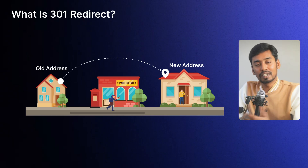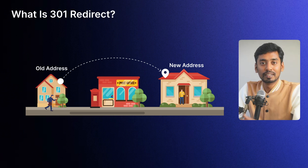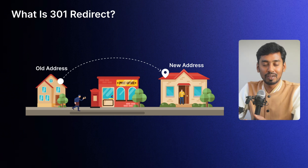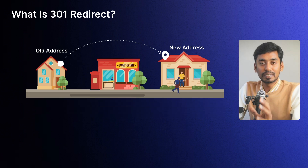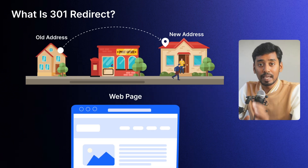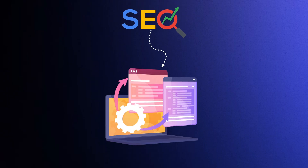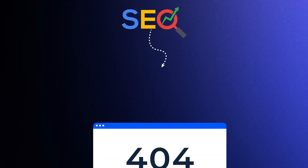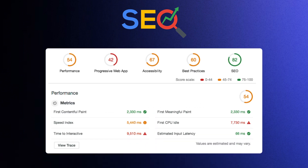So first, what is a 301 redirect? Think of it like changing your home address. When someone types in your old address, they don't just get lost — the post office forwards them to the new one. A 301 redirect does the same thing, but for web pages. And why is this important? Because search engines need to know where your page moved to. If they don't, they treat it as a deleted page and you lose all the SEO value you worked for.